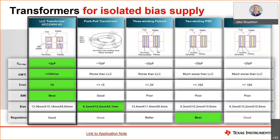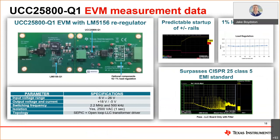Be sure to check out the application note on the product page for the UCC25800-Q1 for transformer design considerations, as well as a list of off-the-shelf part numbers you can select for your next design. If you are interested in potentially using the UCC25800-Q1, I would recommend requesting one of our evaluation modules, which can be used with or without the pre-regulators, depending on your needs. Also be sure to read the data sheet and the application note to learn more from our in-house product experts on the LLC topology and much more.